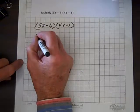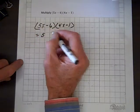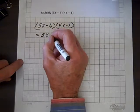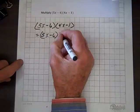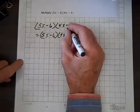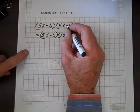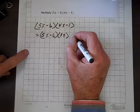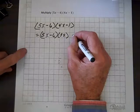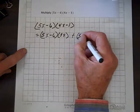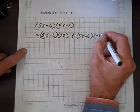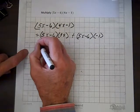for example. So this equals 5x minus 6 times 4x, and minus, because of that minus 1 there, or I'll make it a plus, plus 5x minus 6 times negative 1. So we've distributed the 5x minus 6.